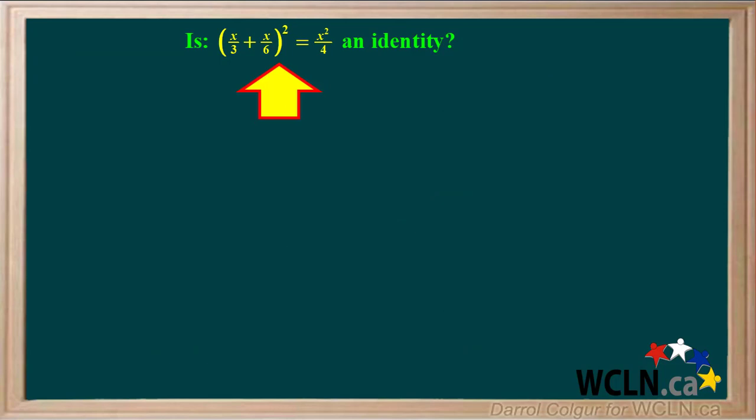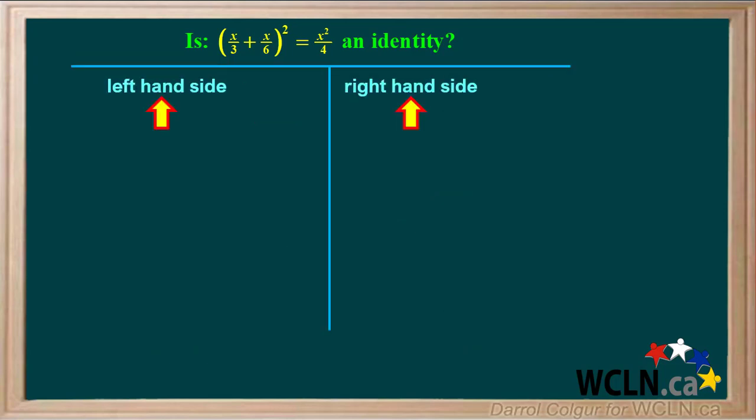Let's do one more example. We're asked if this equation is an identity. We'll start by drawing a table with a left hand column and a right hand column. Now we'll add the expression on the left to the left column and the expression on the right to the right column.